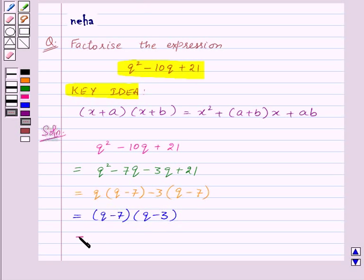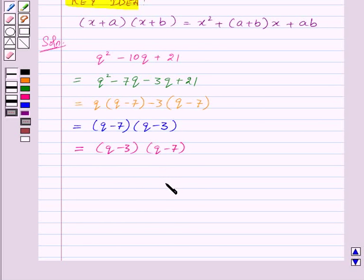Which can also be written as q minus 3 into q minus 7. Thus, the answer to this question is q minus 3 into q minus 7, in which q minus 3 and q minus 7 are the two factors of the given expression, q square minus 10q plus 21.